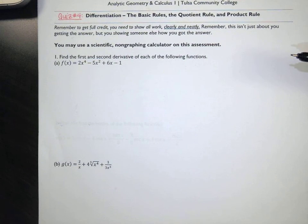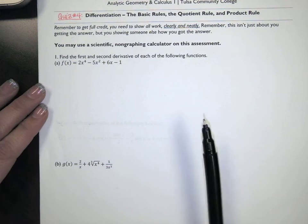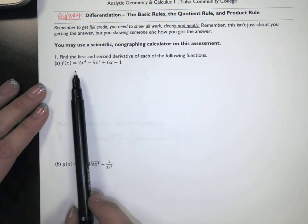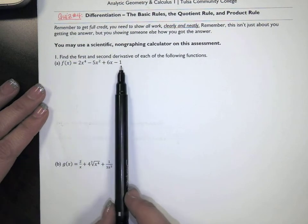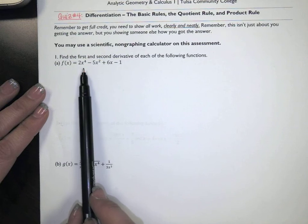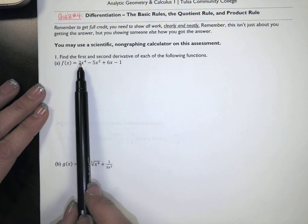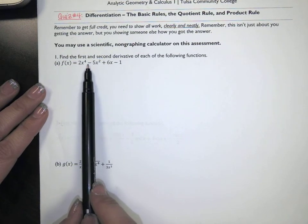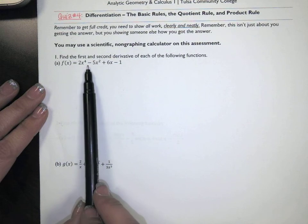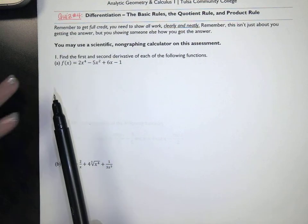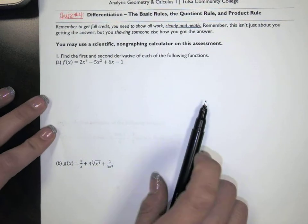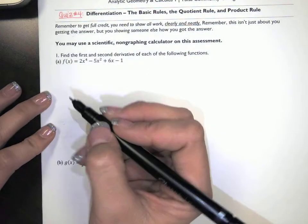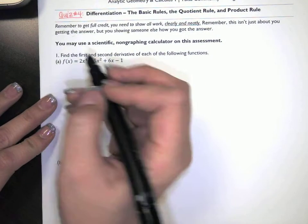At times, algebraic manipulation is appropriate before we take the derivative, but it's actually pretty simple. If you've got a function that has multiple terms — a term being something separated by addition or subtraction — I'll just take the derivative term by term, piece by piece.